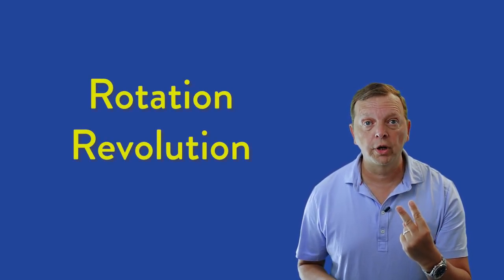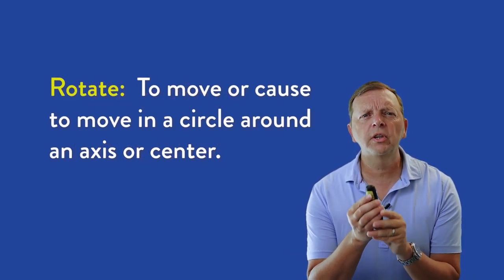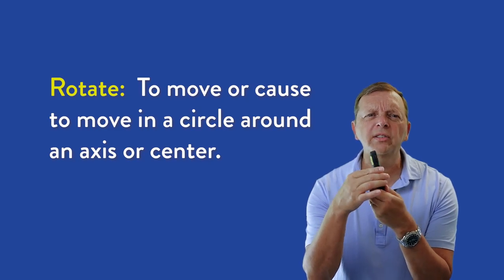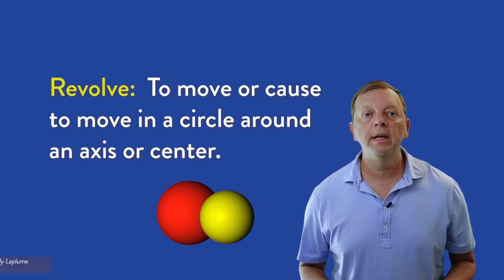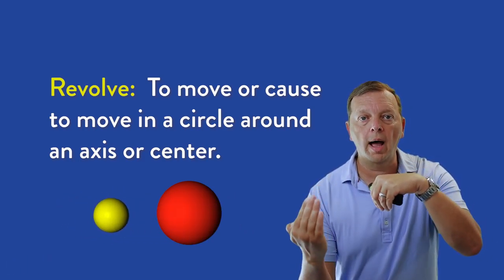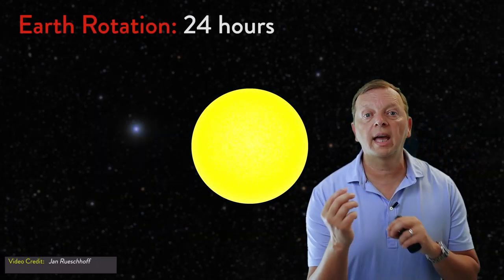Rotation and revolution. To rotate means to essentially move around an axis point. Essentially, rotating means to spin, pretty much how like a top spins. To revolve means to move around another object. The Earth both rotates and revolves.